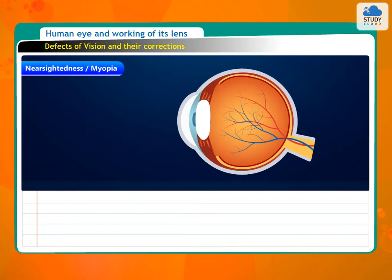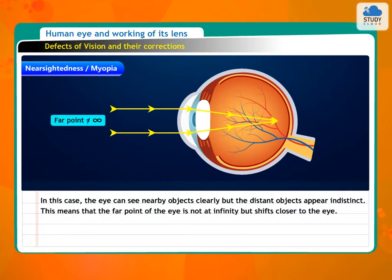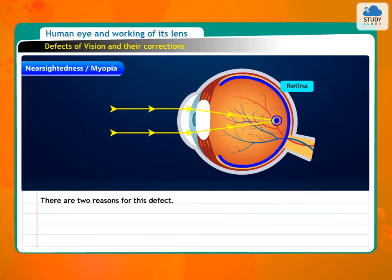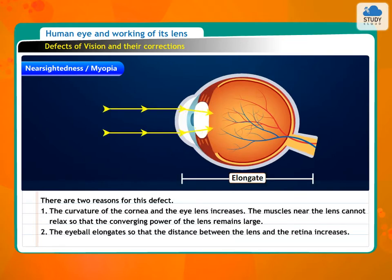1. Nearsightedness or Myopia. In this case, the eye can see nearby objects clearly, but the distant objects appear indistinct. This means that the far point of the eye is not at infinity, but shifts closer to the eye. In nearsightedness, the image of a distant object forms in front of the retina. There are two reasons for this defect: 1. The curvature of the cornea and the eye lens increases, and the muscles near the lens cannot relax, so the converging power of the lens remains large. 2. The eyeball elongates so that the distance between the lens and the retina increases.